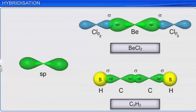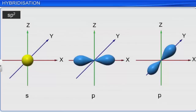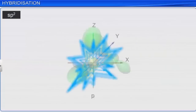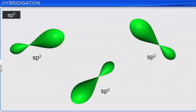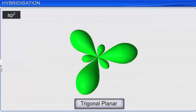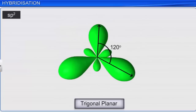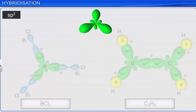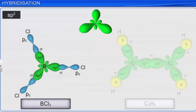In SP² hybridization, one S orbital combines with two P orbitals to form three equivalent SP² hybrid orbitals. They have a trigonal planar arrangement, and the angle between two orbitals is 120 degrees. Compounds whose central atom displays SP² hybridization include BCl₃ and C₂H₄.